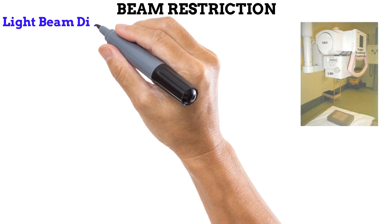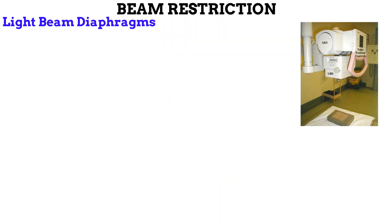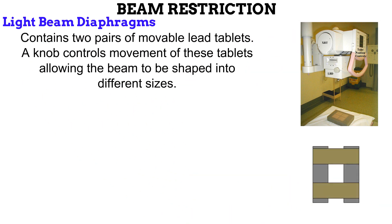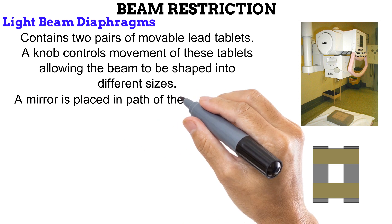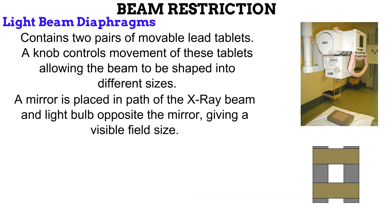Lastly, we have the light beam diaphragm, or collimator. It is the most advanced and sophisticated beam restriction device used in radiography today. It is fitted to the X-ray tube exit port. Inside the light beam diaphragm, there are two pairs of movable lead tablets. The gray knob on the light beam diaphragm controls the position of these tablets. By turning the knob, a pair of lead tablets are either brought closer or taken farther apart, allowing you to shape the beam into any size. Also, a mirror is placed inside the light beam diaphragm where it can intersect the path of the X-ray beam. A light bulb is placed opposite this mirror, enabling the radiographer to see the field size created by the collimator.